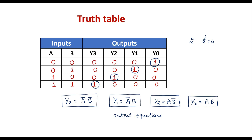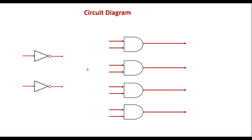Now let me draw the circuit diagram. We have 4 outputs — Y0 equals A-bar B-bar, Y1 equals A-bar B, Y2 equals A B-bar, and Y3 equals AB. To implement each output we need one AND gate, so we need 4 AND gates in total. To generate A-bar and B-bar we need 2 NOT gates. So the circuit uses 2 NOT gates and 4 AND gates.